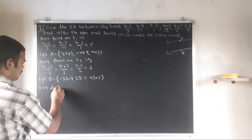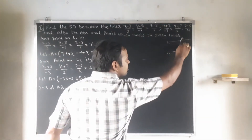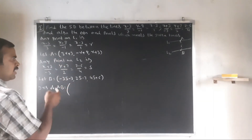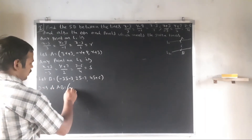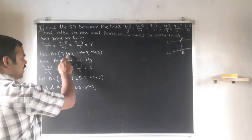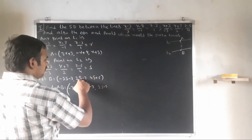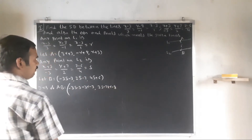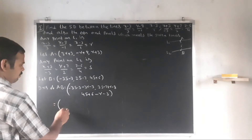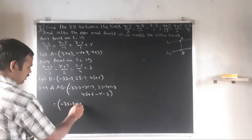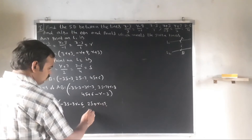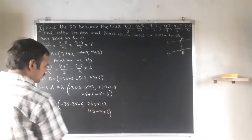Direction ratios of AB equal x2 - x1, y2 - y1, z2 - z1, which gives: (-3S - 3R - 6), (2S + R - 15), (4S - R + 3).